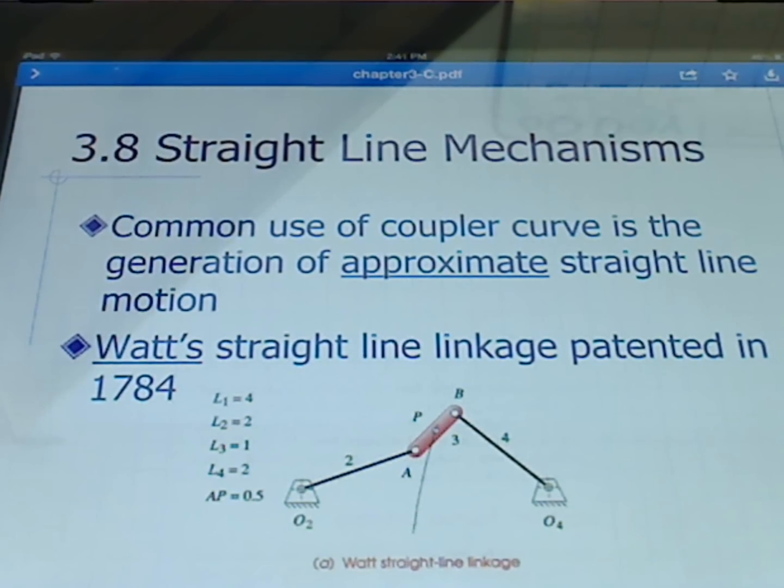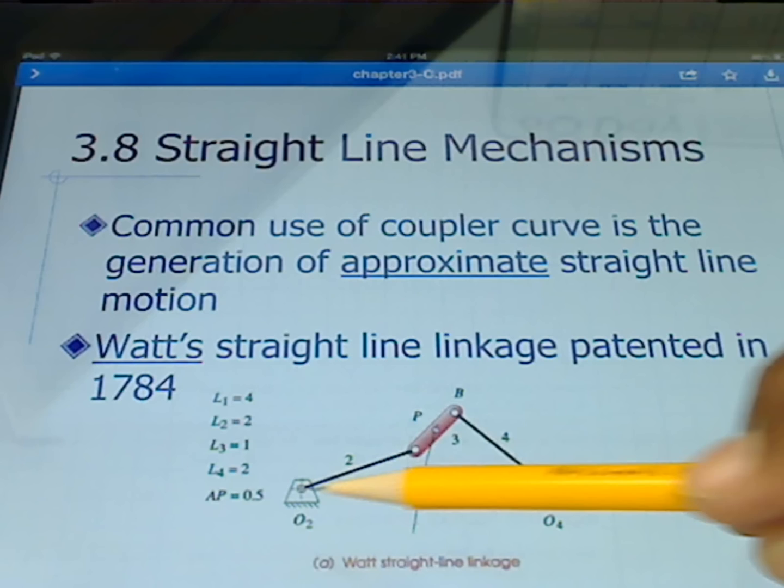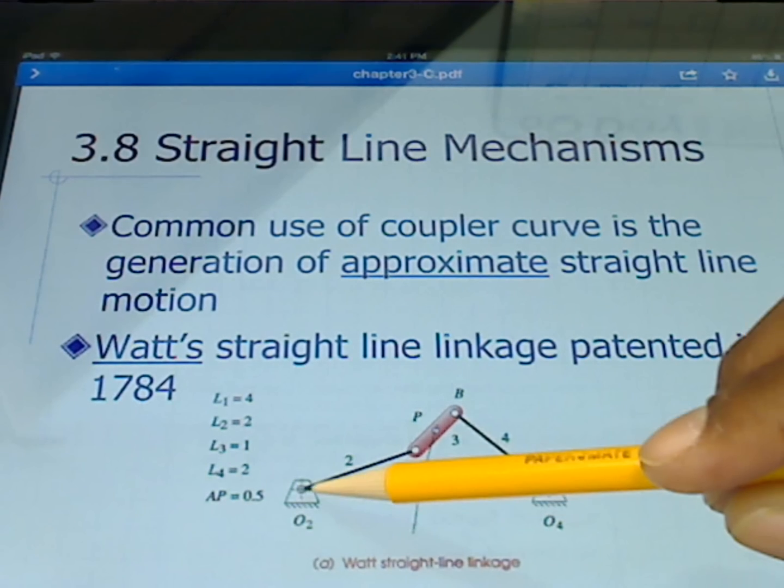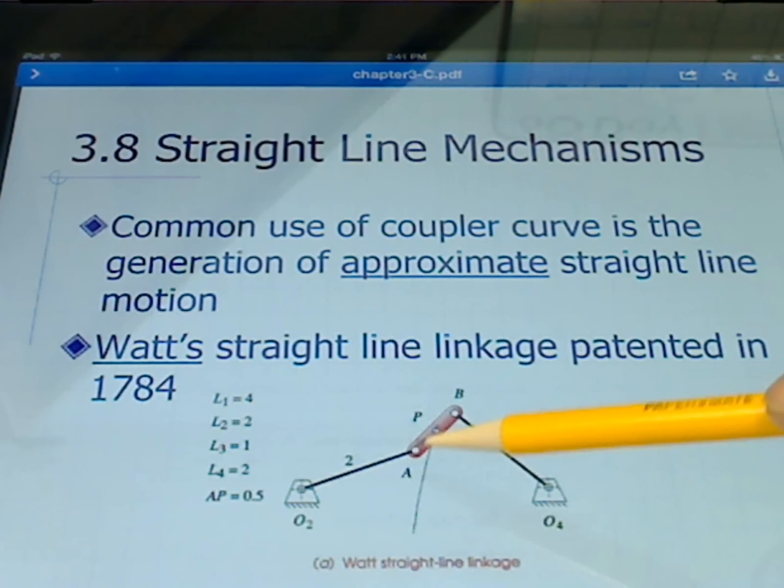Here we have a Watt straight line linkage. It was patented in 1784. We see here is a four bar and we have the ground link, the crank, the coupler, and the output link. And the coupler point there follows an approximately straight line.